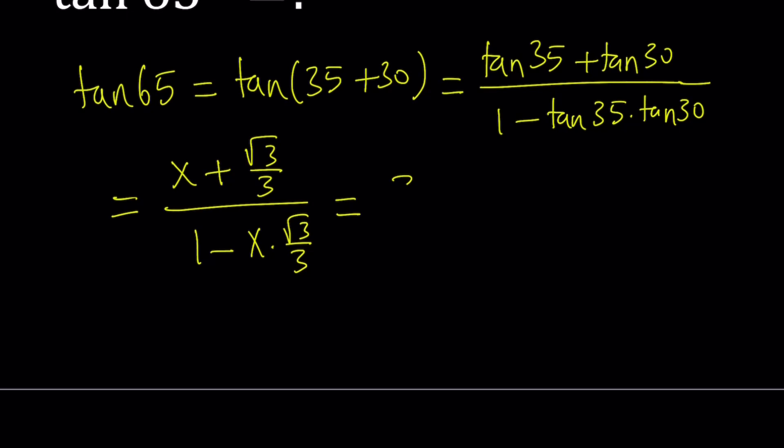Make a common denominator. You get 3x plus root 3, and at the bottom, you get 3 minus root 3x. Okay, that was easy, but we're going to take it to another level. And here's what we're going to do.